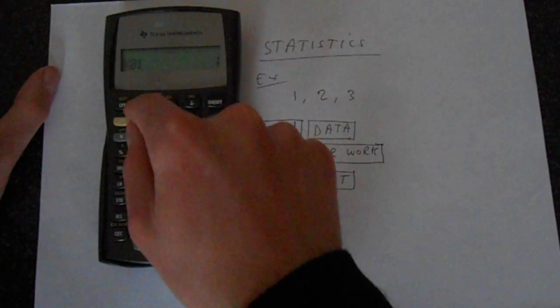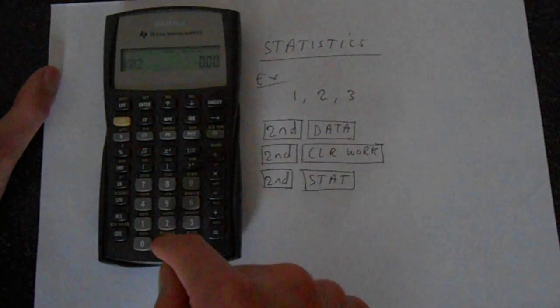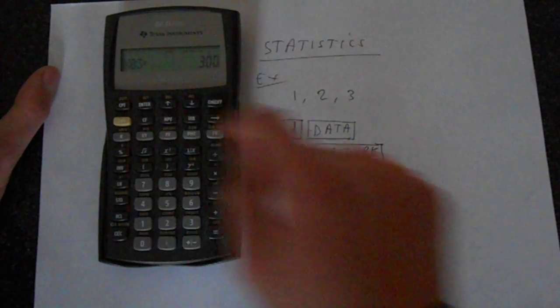So we'll just go ahead and enter that, so press 1 and then enter, then we go down, we'll just ignore Y, then go 2, enter, just ignore what's in Y and then 3 and then enter.